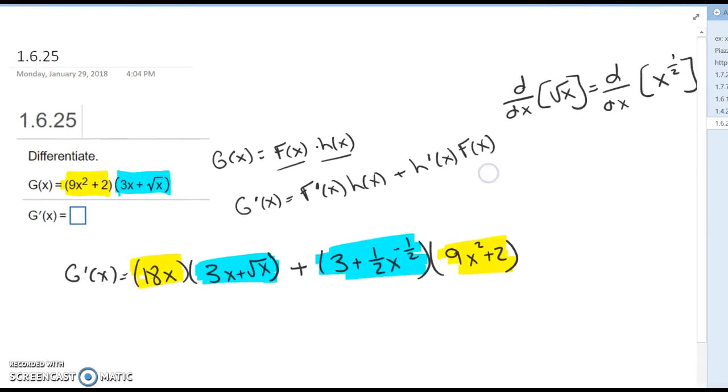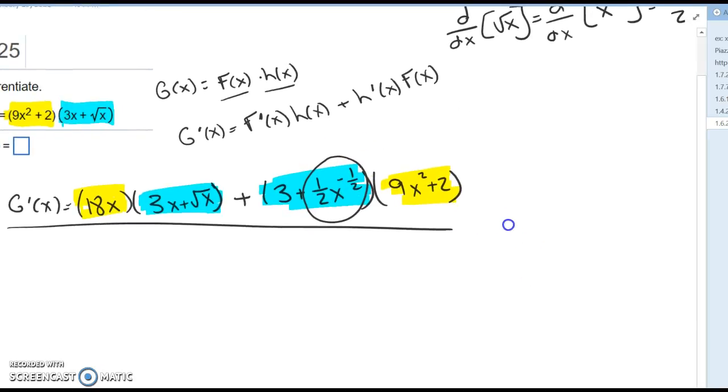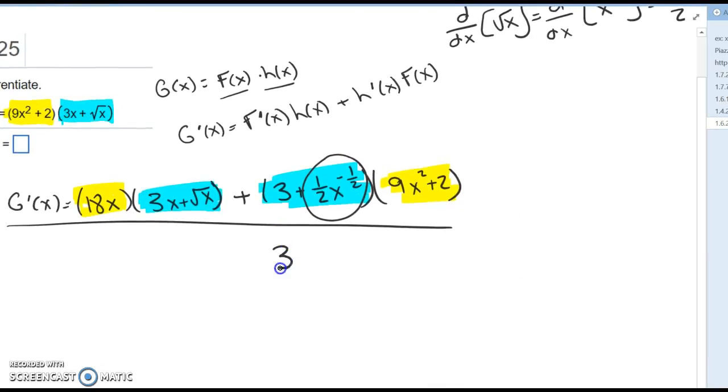So be a little careful the way you enter this, but you should be able to put the whole thing like that into MyMathLab. Be careful with your parentheses and then also be careful with entering things a certain way. They might say enter with positive exponents, so you might want to write this as 3 plus 1 over 2 square root of x. But it should accept it if it's correct. If not, please let me know.